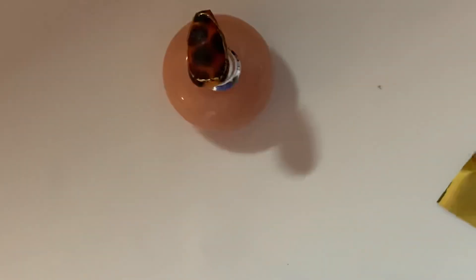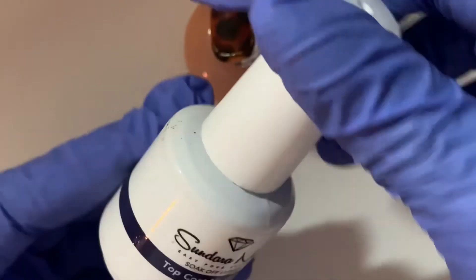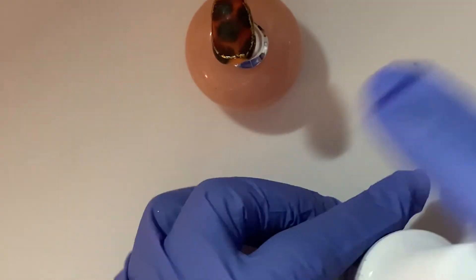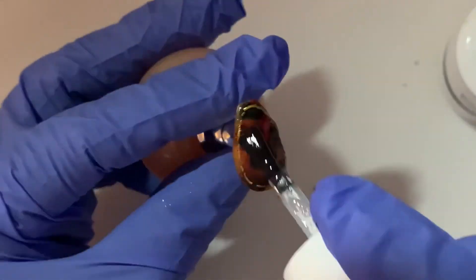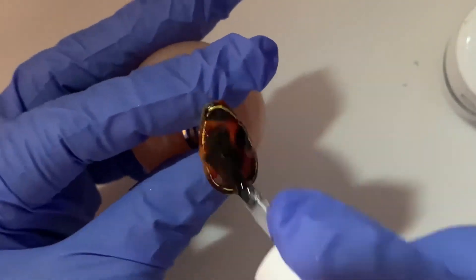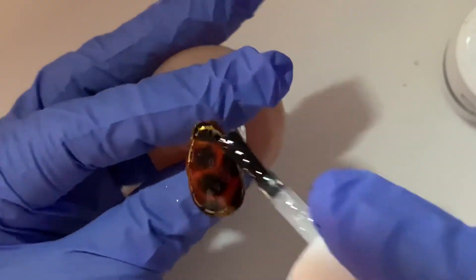The final step is to apply your topcoat. Once you apply your topcoat, this step you're going to want to cure for 60 seconds to finish it off.